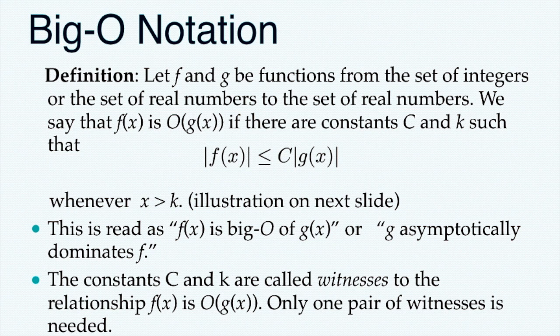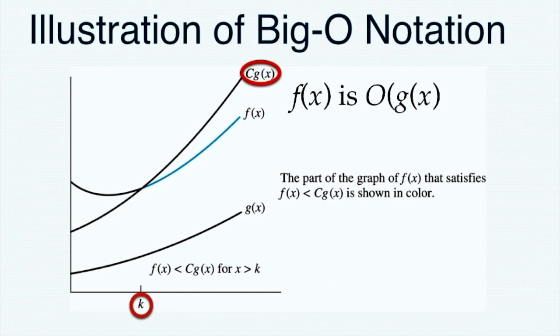The constants c and k are called witnesses to the relationship between f(x) and O(g(x)), and only one pair of witnesses is needed to establish this relationship. Looking at the diagram, f(x) behaves as shown in blue, and c·g(x) acts as the upper limit or cap of f(x).